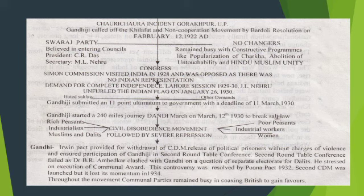After that, the Swaraj Party was formed by Chittranjan Das and Motilal Nehru. They thought that if they had to oppose the British, they could go to the council or parliament and oppose from within. At this time Congress had two groups — one wanted to go into the councils, and others wanted no changes and remained busy with constructive programs like popularization of khadi, abolition of untouchability, and Hindu-Muslim unity.